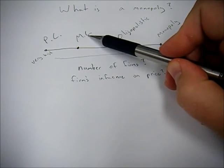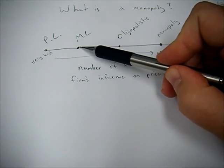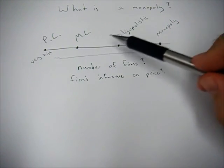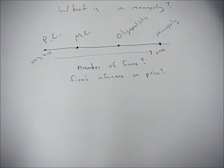So with monopolistic competition, we still have a very high number but less than perfect competition. Oligopolistic, even less, but more than monopoly.